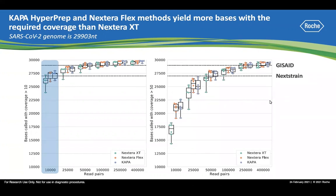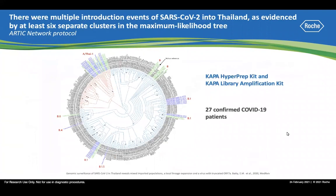The same trend holds when you increase the coverage requirement to greater than 50X — you simply need to sequence more in order to clear the completeness threshold. Based on their evaluation, they decided to implement the KAPA HyperPrep workflow in their ARTIC network protocol and sequenced 27 COVID-19 patient samples. Their sequencing results identified six separate clusters, indicating multiple introductions of SARS-CoV-2 to Thailand at the early stage of the COVID-19 pandemic.